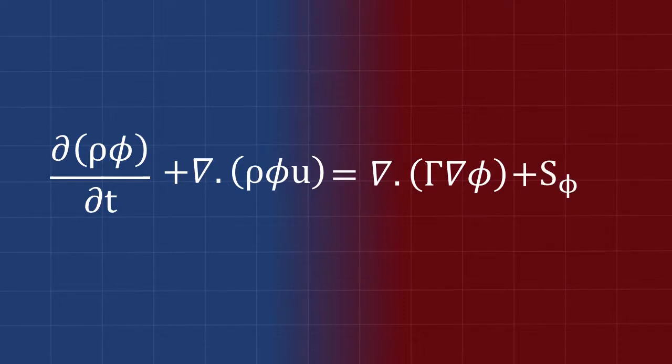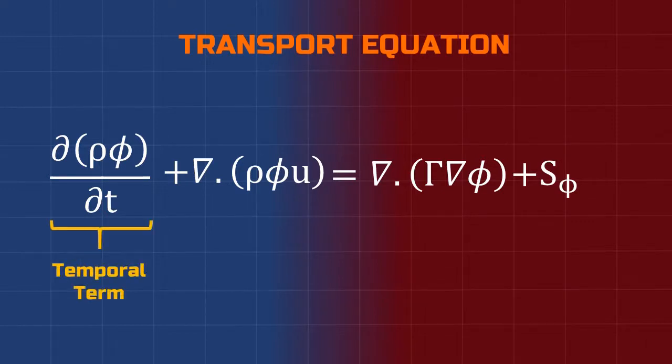The first term is known as the temporal term, which gives the rate of increase of the property Phi. The second term in this is known as the convective term, which denotes the net rate of flow of the property Phi out of a fluid element.